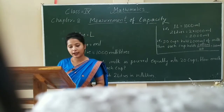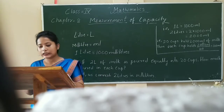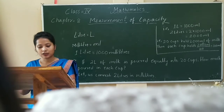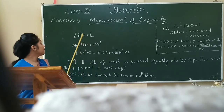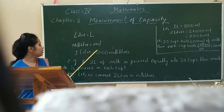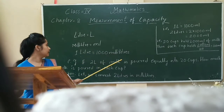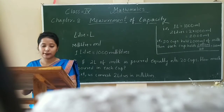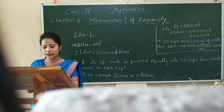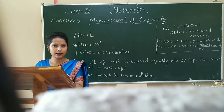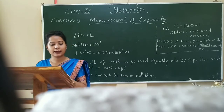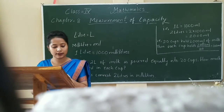Now, measurement of capacity. Liter is the standard unit for measuring capacity or volume. The short form of liter is L, and milliliter is mL. 1 liter equals 1000 milliliters. Measurement of capacity is required to measure milk, water, etc. Liquids are measured in liters and milliliters. We can add, subtract, multiply, and divide liters and milliliters.